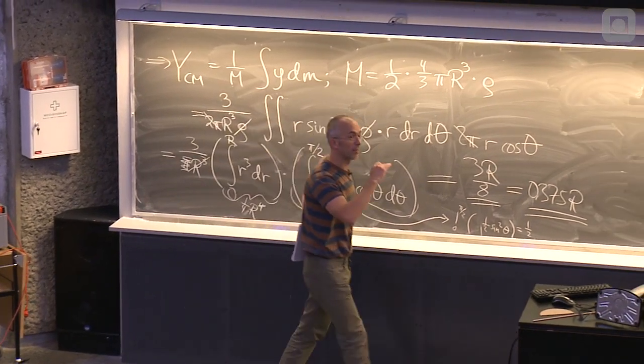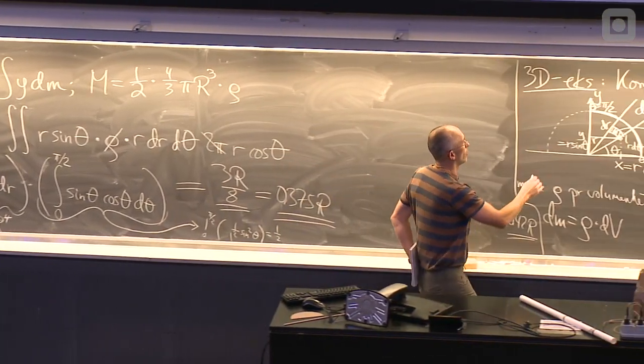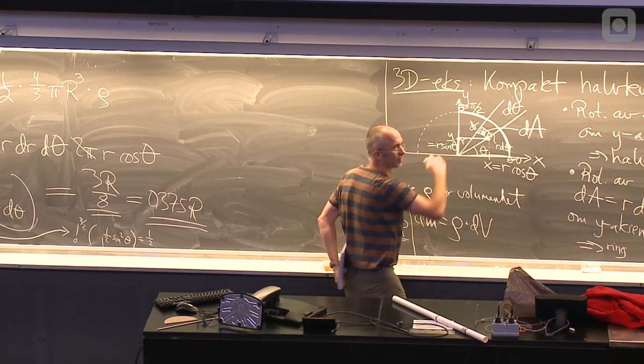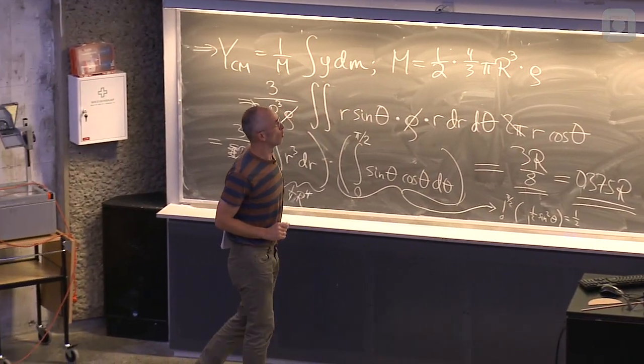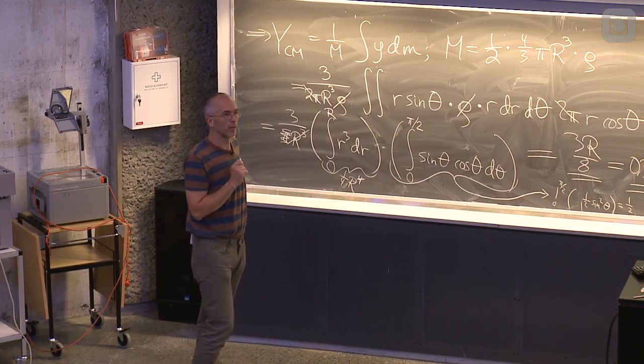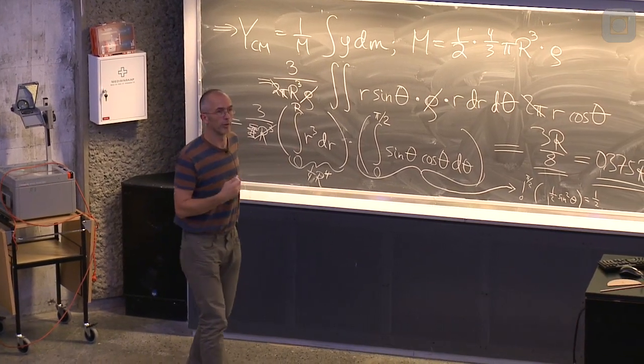Men tyngdepunktet har flyttet seg litt ned, og det skyldes vel at det er litt mer, ja, forholdsvis litt mer masse ned mot x-aksen i det tilfellet her, enn for de todimensionale skivaene.